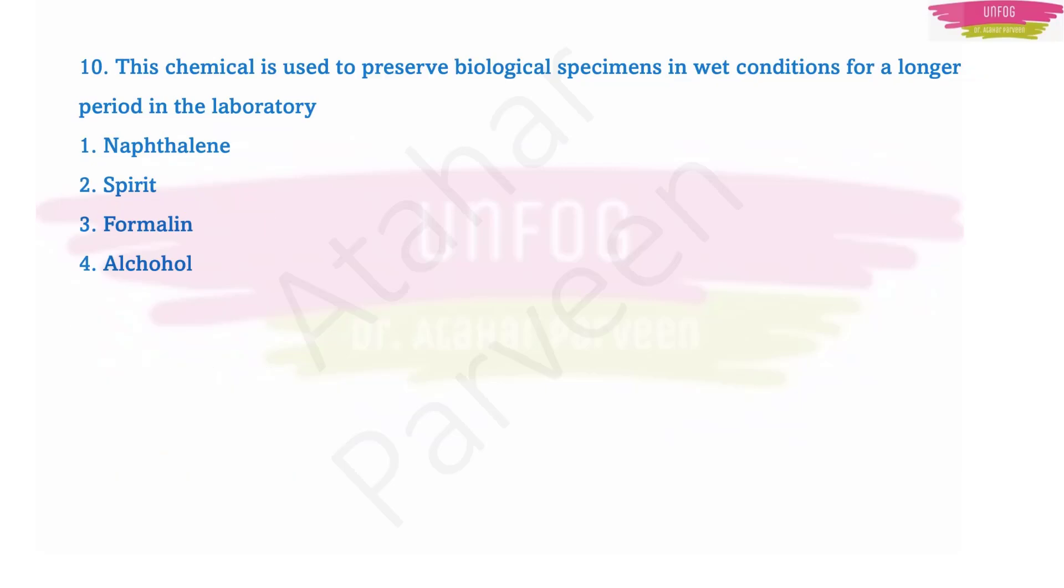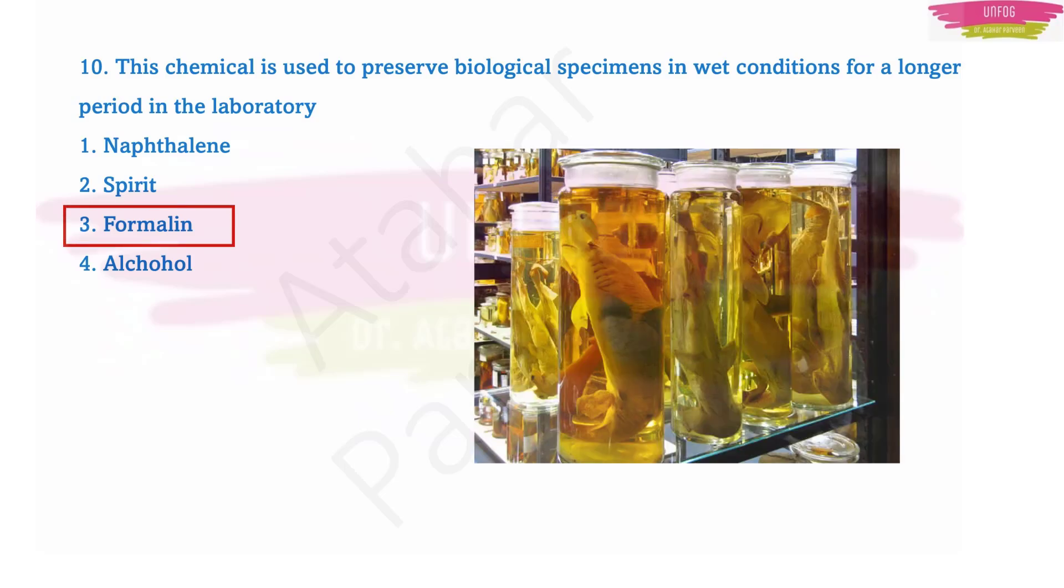Question number ten: this chemical is used to preserve biological specimens in wet conditions for a longer period in the laboratory. Which is the chemical we use in laboratory to preserve the biological specimens? It is formalin. You must be remembering in PUC first year and second year in biology lab, we used to see bottles wherein the biological specimens were stored in one liquid - that liquid is formalin.